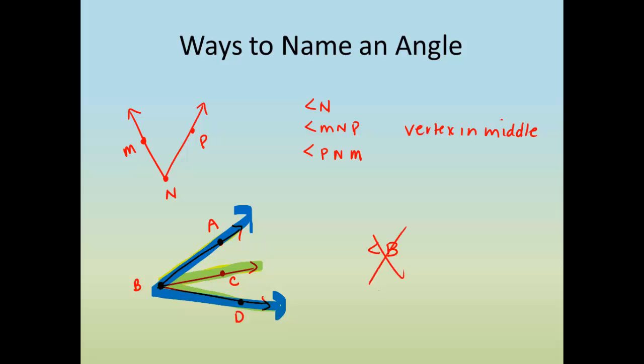So if I want to name an angle when I've got all these things going on, I have to use three different letters. B will always be the middle letter because I have to put the vertex in the middle.